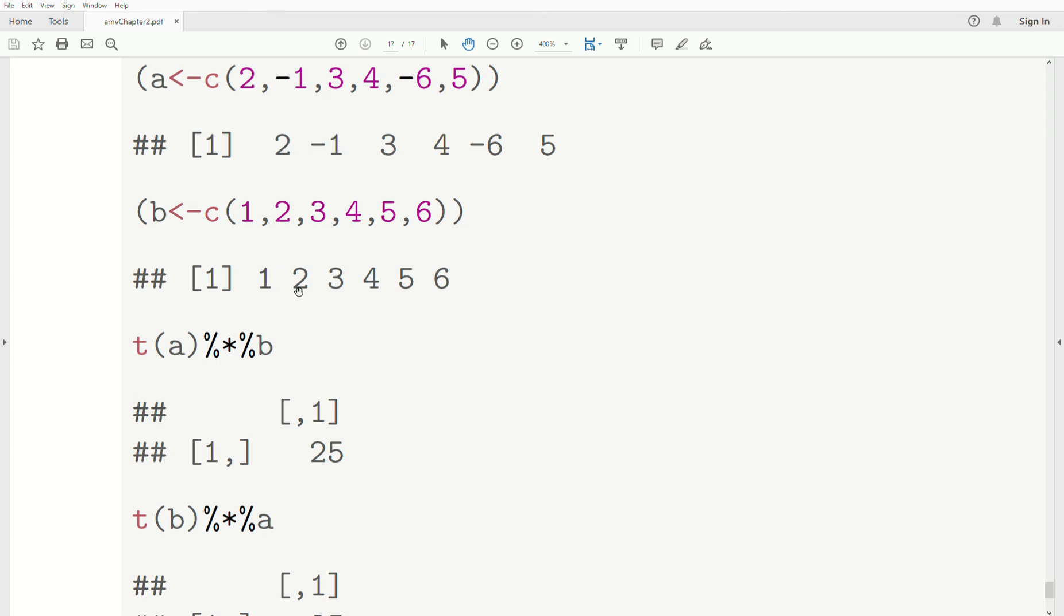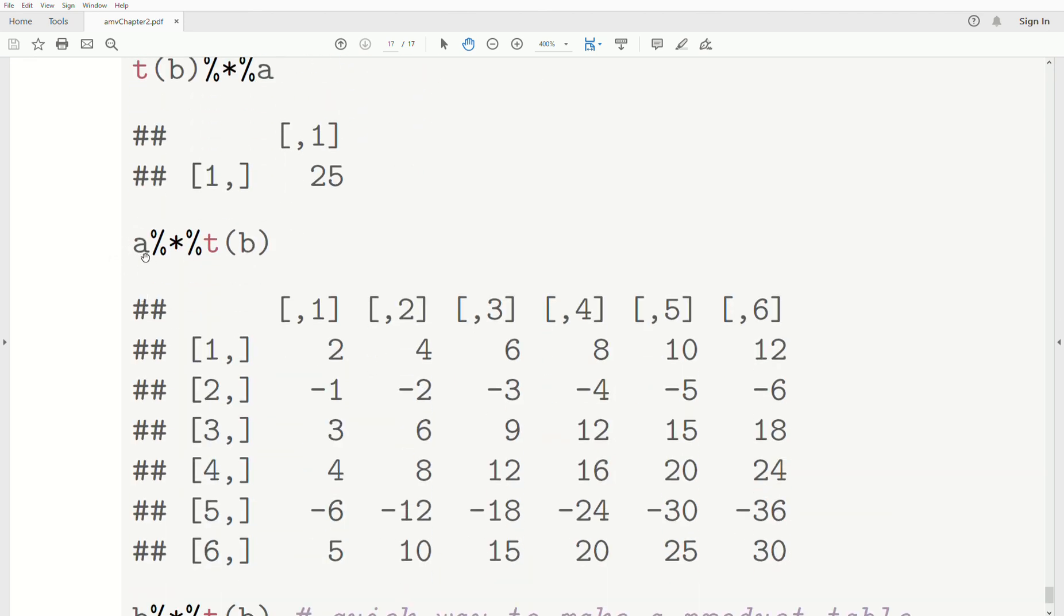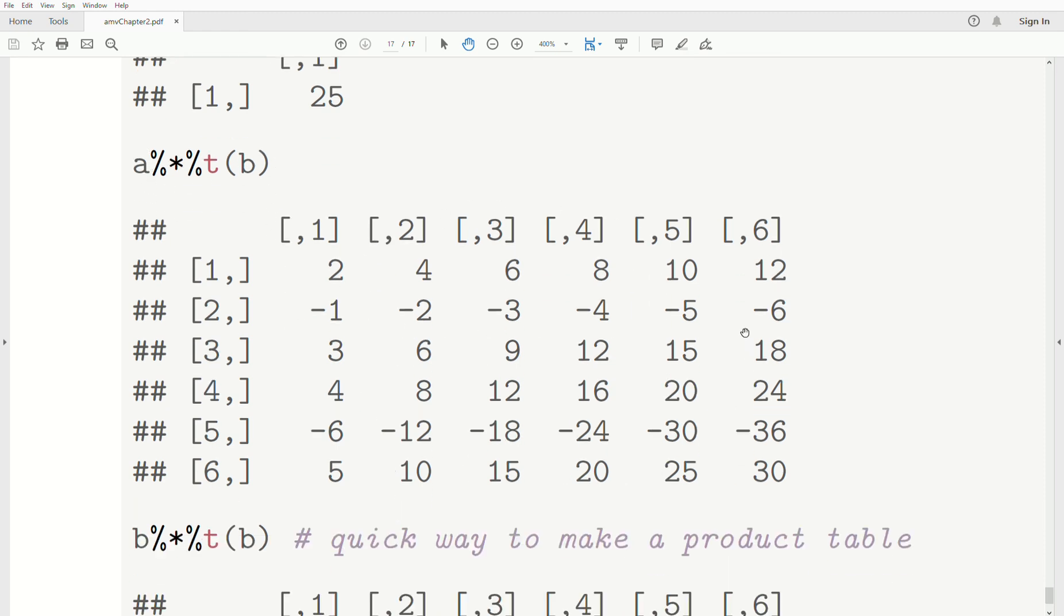Which essentially says take the first components, multiply them, add it to the product of the second component, product of the third, plus the product of the fourth, etc. We could take A transpose B. Remember, this is a column vector, and now it's a row vector. So it creates a matrix, and then we get this.